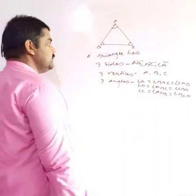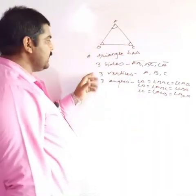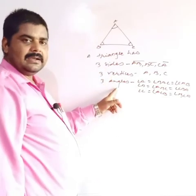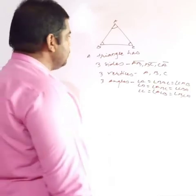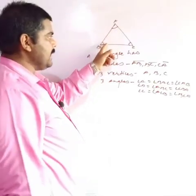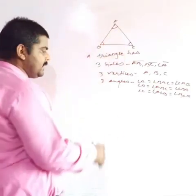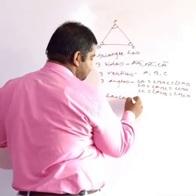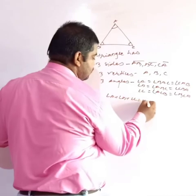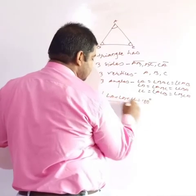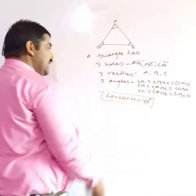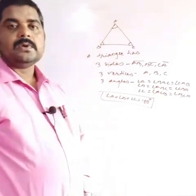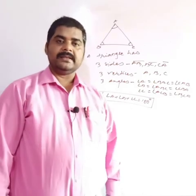So a triangle has three sides, three vertices, and three angles. You should also know the angle sum property: the sum of all angles of a triangle — angle A plus angle B plus angle C — is equal to 180 degrees. This is known as the angle sum property of a triangle. I hope you enjoyed this session.